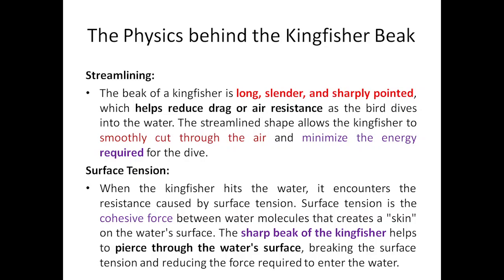Next is surface tension. When the kingfisher hits the water, it encounters surface resistance — the resistance caused by the water's surface. Surface tension is defined as the cohesive force between water molecules that creates a skin on the water surface. The sharp beak of the kingfisher helps to pierce and cut through this water surface, breaking the surface tension and reducing the force required to enter the water.